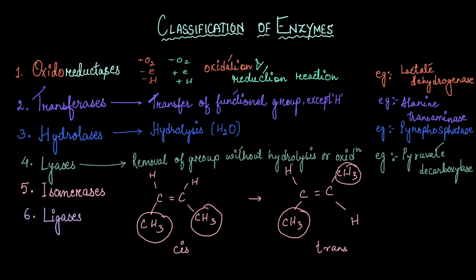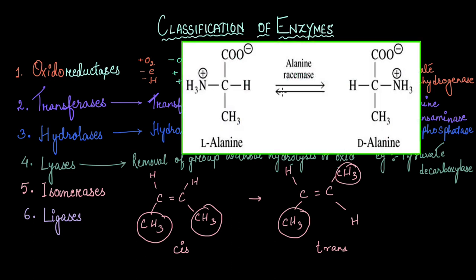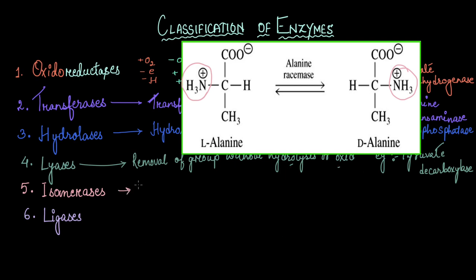Apart from cis and trans arrangement, isomers can also be of other types. For example, here we have alanine that has an amine group on its left, and after rearrangement it now sits on the right. Both of them have the same molecular formula, but as their functional group is rearranged, they now have different chemical and physical properties. The enzyme that does all this rearrangement of atoms to form isomers are classified under isomerases.